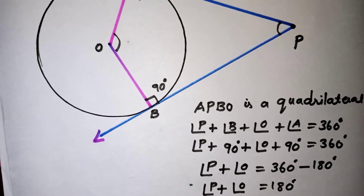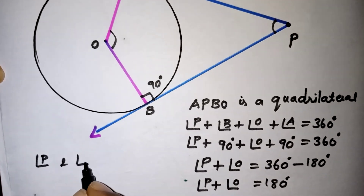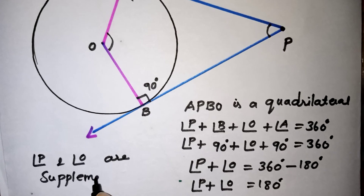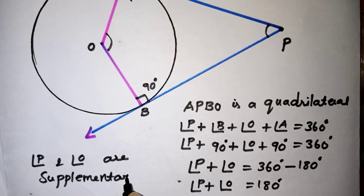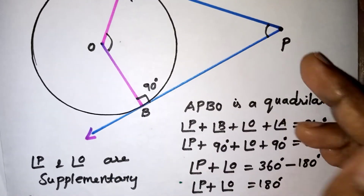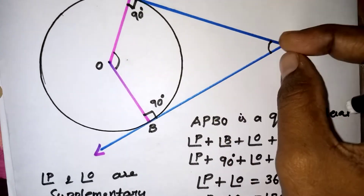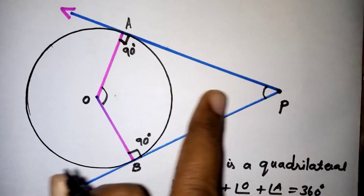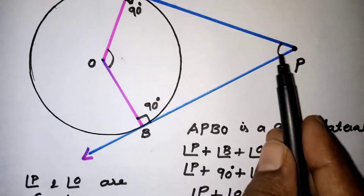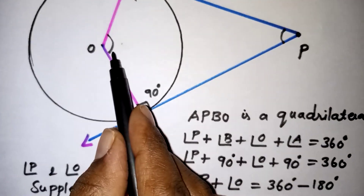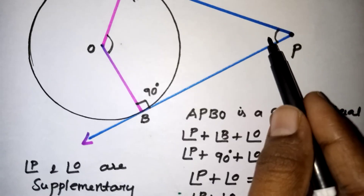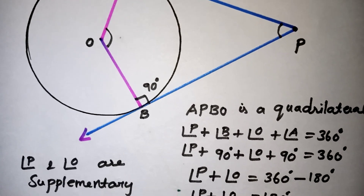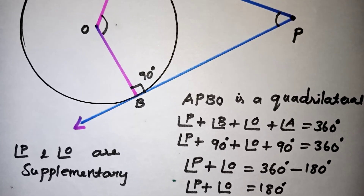So angle P and angle O are supplementary angles — supplementary means they add up to 180 degrees. The angle formed by the two tangents and the angle at the center are always supplementary. For example, if angle P is 60 degrees, then angle O must be 120 degrees, since 60 + 120 = 180. Thank you for watching — if you like our video, please subscribe to our channel for more videos.